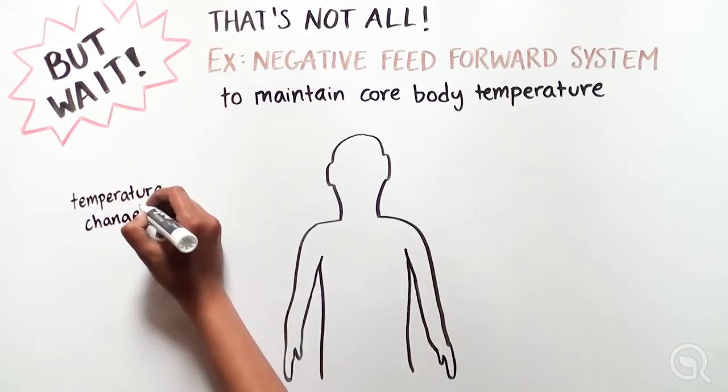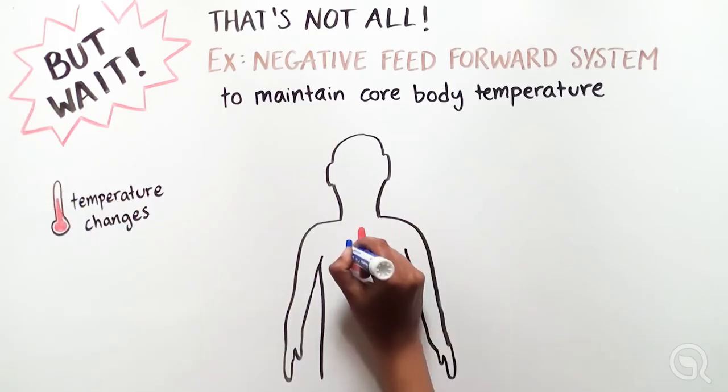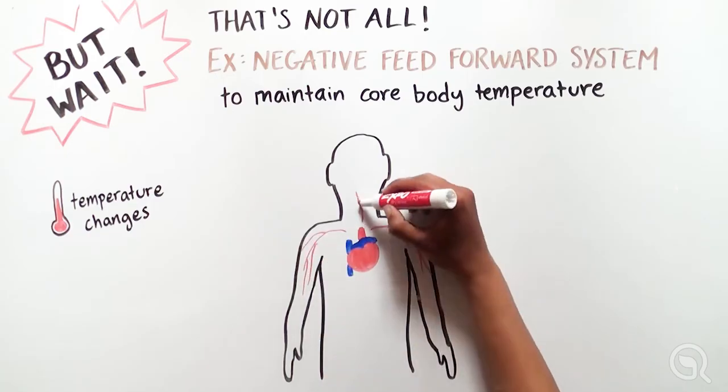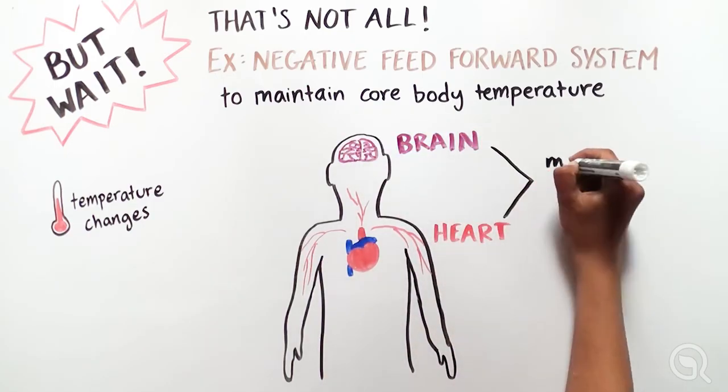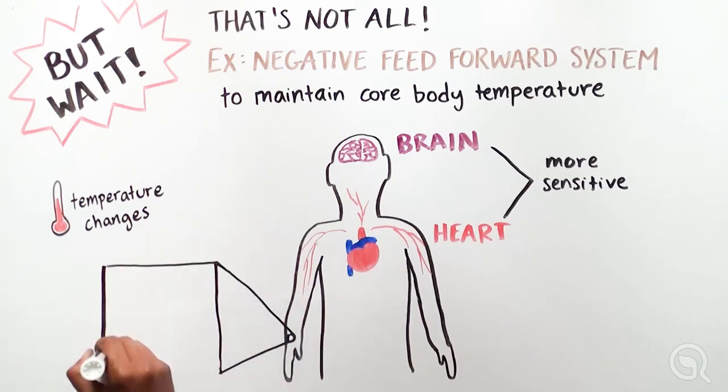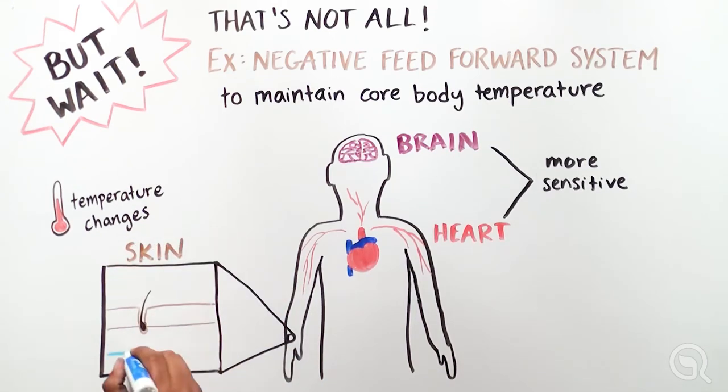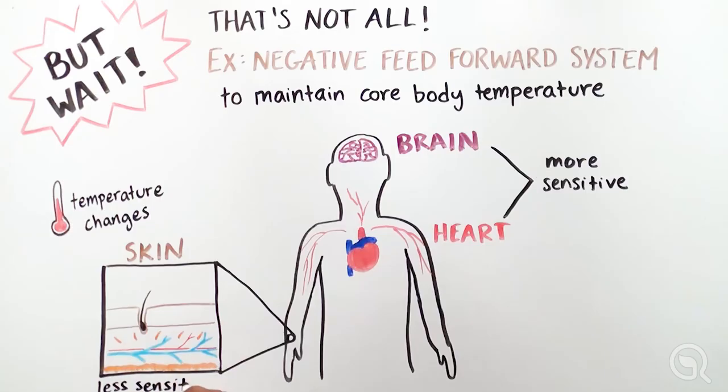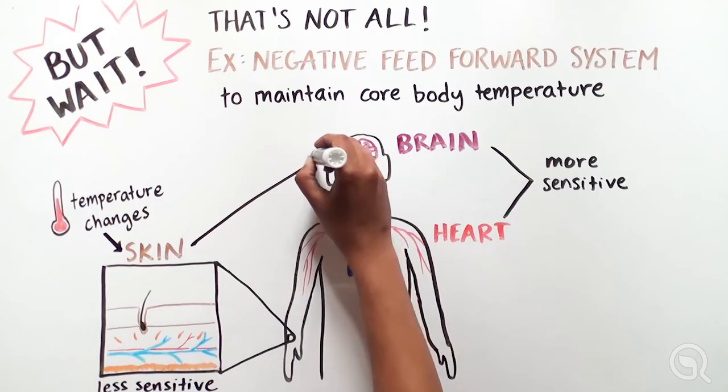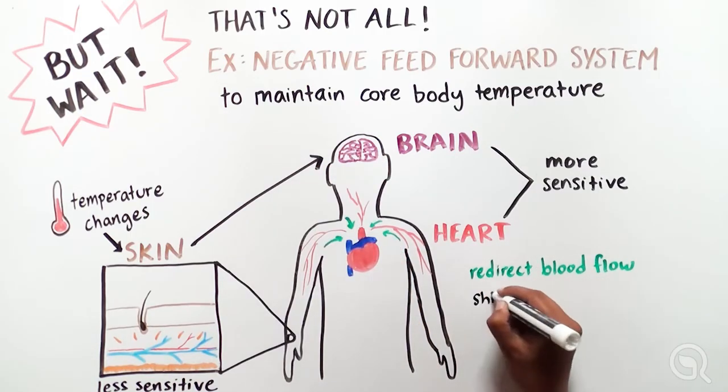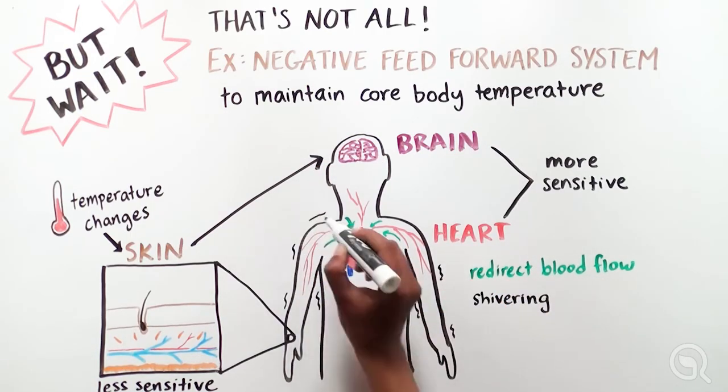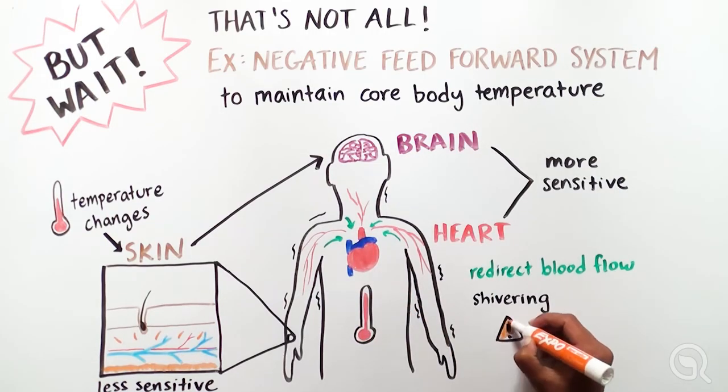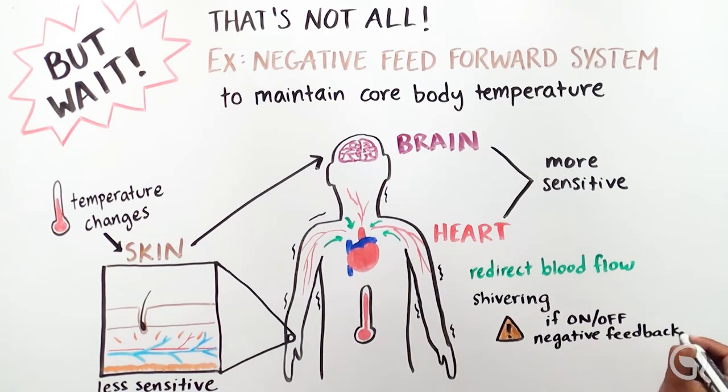A biological example is maintenance of core body temperature. Internal organs, like the heart and brain, are extremely sensitive to small temperature changes. Our skin, however, is less sensitive to environmental changes. So any temperature adjustments detected through our skin will signal to the brain to take preventative measures, like redirecting blood flow to internal organs and shivering to help maintain core body temperature. If our body only used on-off negative feedback, then our core body temperature would reach dangerous levels before the body was able to fix it.